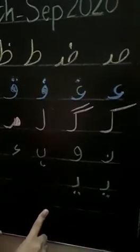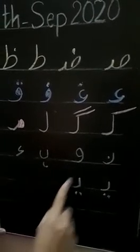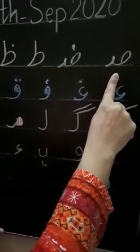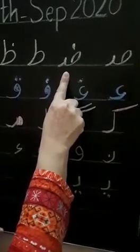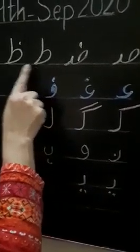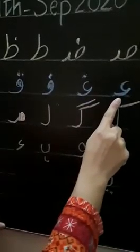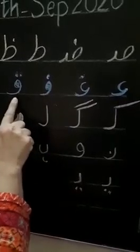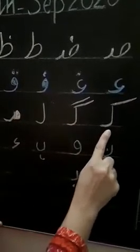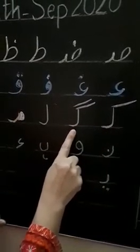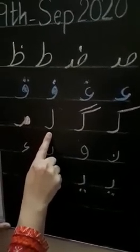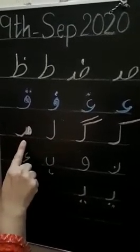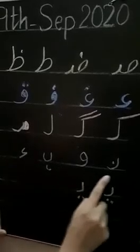Now look here. Now we are going to read this Harufi Tahji with their name and sound. Suad — S. Suad — Z. Toin — Z. Ain, Ghain. Fa — F. Qaf — Q. Kaf — K. Gaf — G. Lam — L. Meem — M. Nun — N.